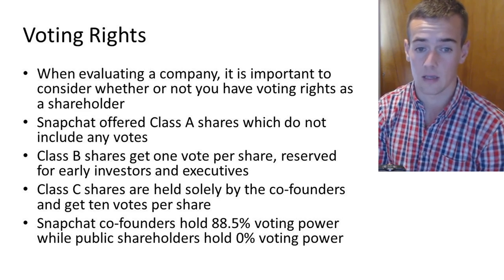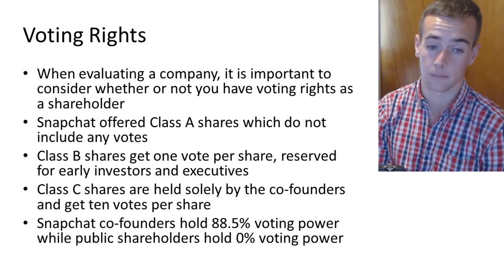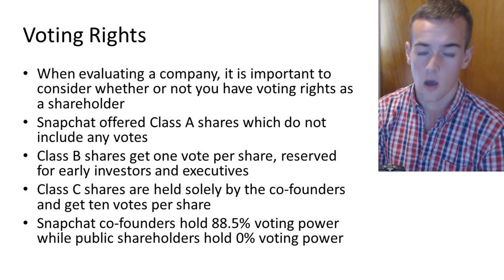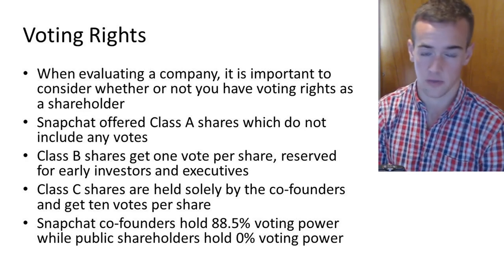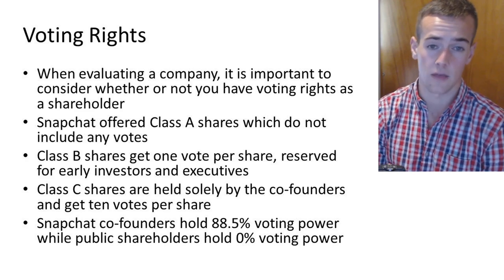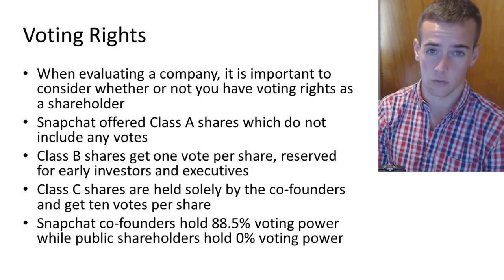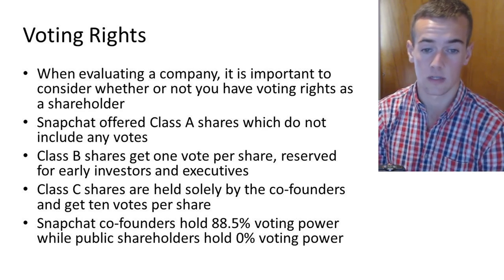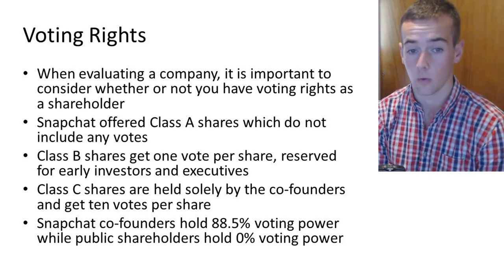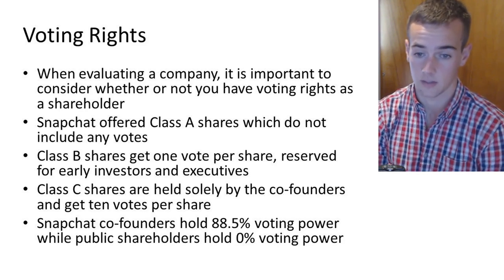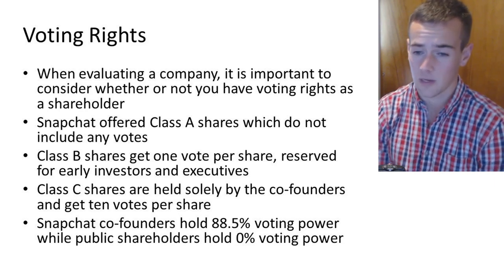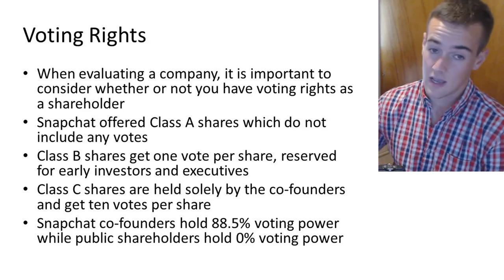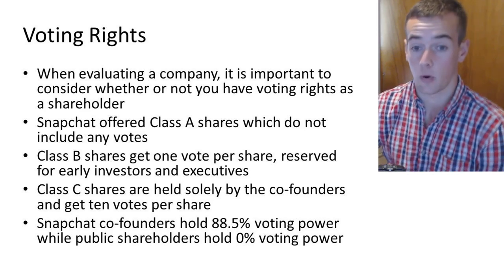That's why I'm always looking for a stock that offers me voting rights. With Google, when they split shares, they offered everybody who had an existing share one non-voting share per share they had — that's why you have GOOG and GOOGL. One has voting rights, one does not. I always want to be buying shares of a stock that I have voting rights, because I want to have a say in company decisions. I don't want co-founders to have 88.5% voting power, because that means whatever they say goes.